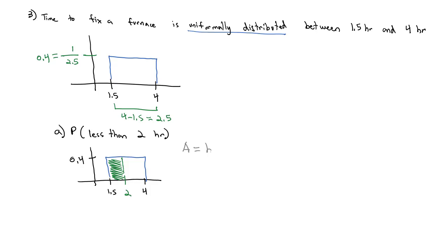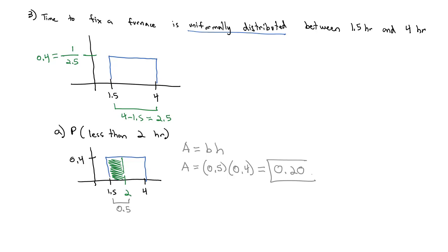We see that area is a rectangle, and we know the area of a rectangle is base times height. The base goes from 1.5 to 2, a distance of 0.5. So area equals base of 0.5 times height of 0.4, and when I multiply those together, we get 0.20. That means there's a 20% chance that the time to fix a furnace will be less than 2 hours.